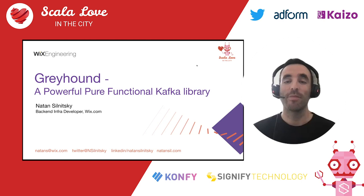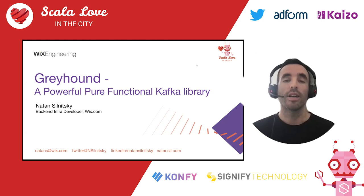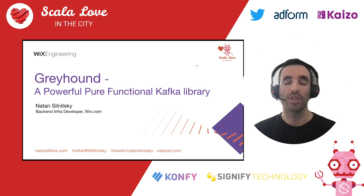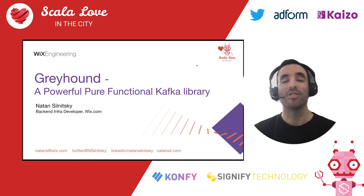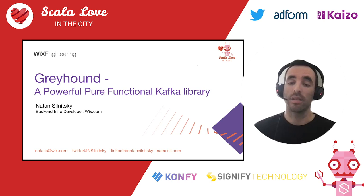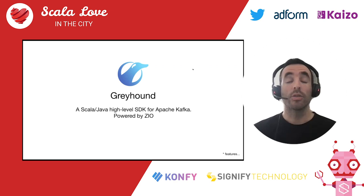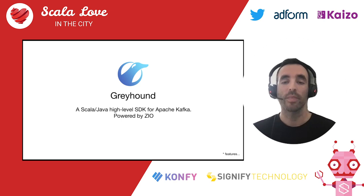Welcome everyone. My name is Natan Selnitsky, and I'm a back-end infrastructure developer at Wix.com. This talk is about Greyhound, a high-level, event-driven, functional SDK for Apache Kafka. It is used by almost all of the 1,500 microservices on Wix's production environment. I'm part of the data streams team at Wix, where we recently rewrote Greyhound from scratch, implementing it with a functional design paradigm and the ZIO library. We decided to open source Greyhound from day one for the rewrite, and we offer a lot of cool features that I will share with you.